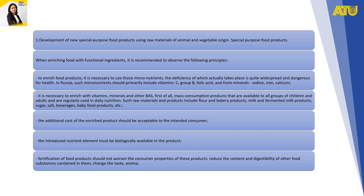It is necessary to enrich, first of all, mass consumption products that are available to all groups of children and adults and regularly used in daily nutrition. Such products include flour and bakery products, milk and fermented milk products, sugar, salt, beverages, baby food products, and so on. The additional cost of the enriched products should be acceptable to the intended consumer.